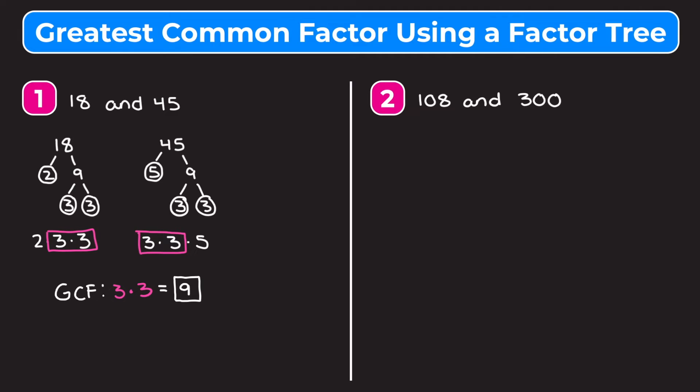You may be thinking this method is kind of tedious, especially for smaller numbers like 18 and 45 — you probably could have just written out all the factors and easily seen the greatest common factor is nine. Where this method comes in handy is with bigger numbers, like example two, where you might not know how to write out all the factors of 108 and 300. Let's jump into example two and I'll show you how this method is useful.